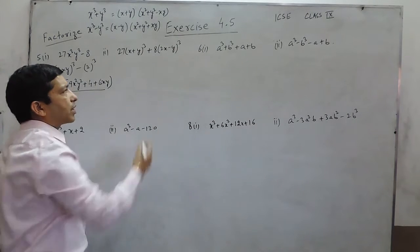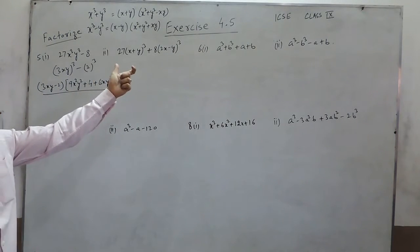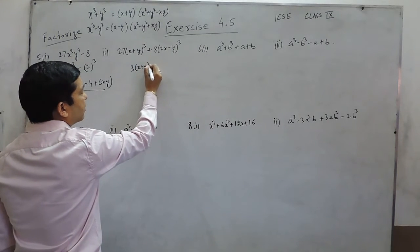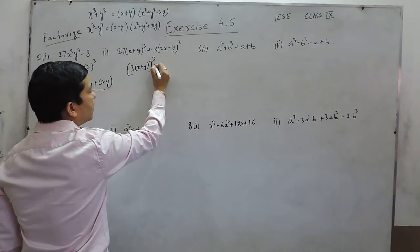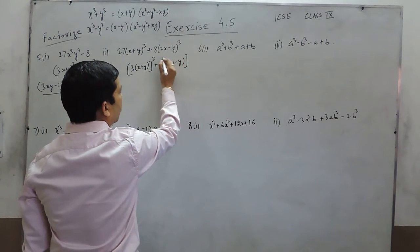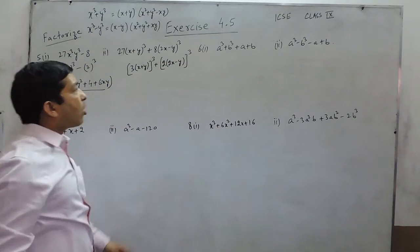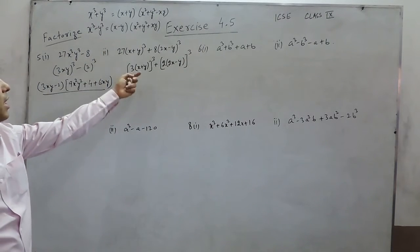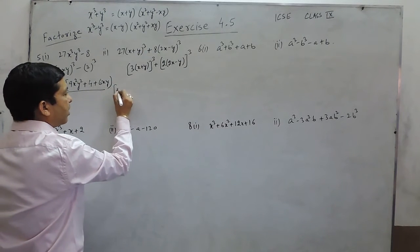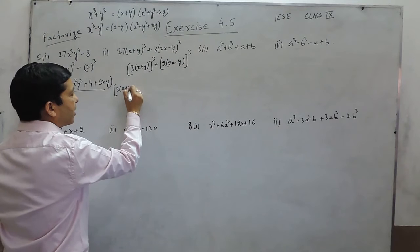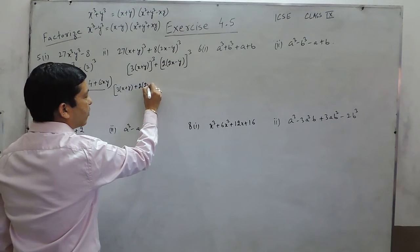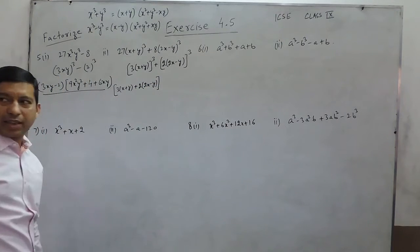Now if we look at the next part of this question, the terms are a bit lengthy. This I can write as (3x+y)³, and this can be written as (2(2x-y))³. Because we already know the formula for x³+y³, we apply it here. So the first factor is 3(x+y) plus 2(2x-y).